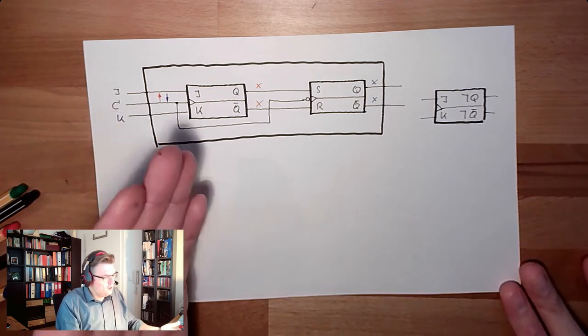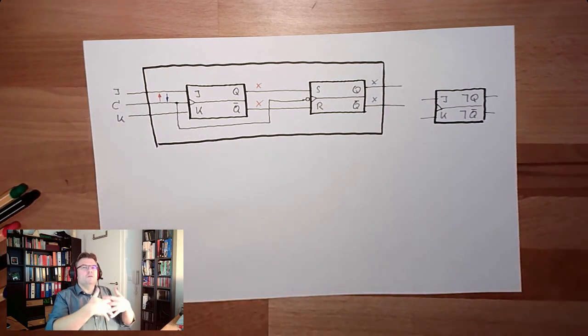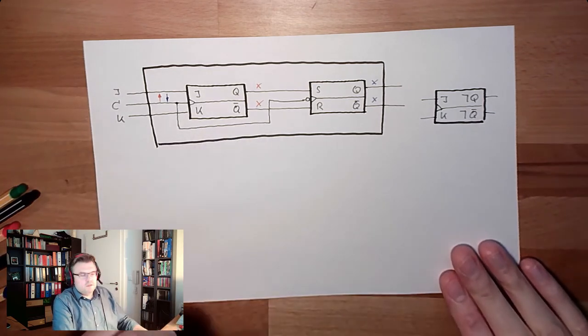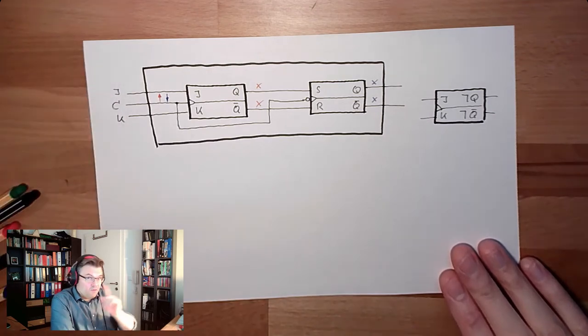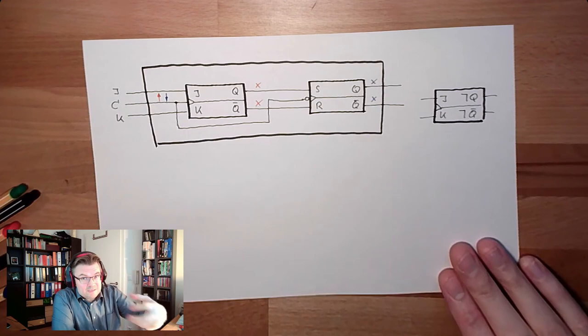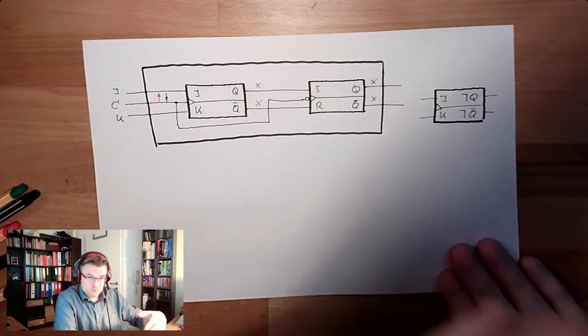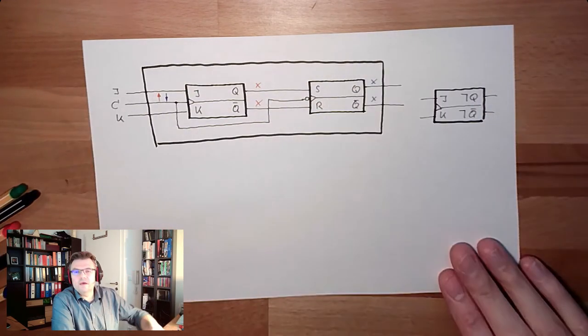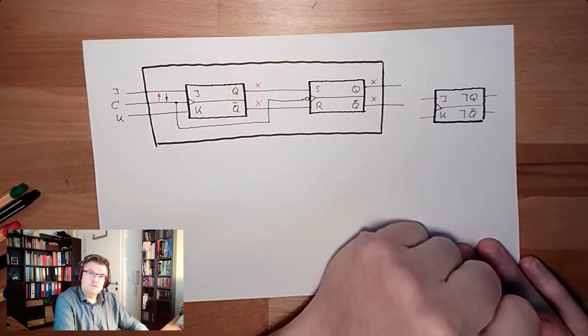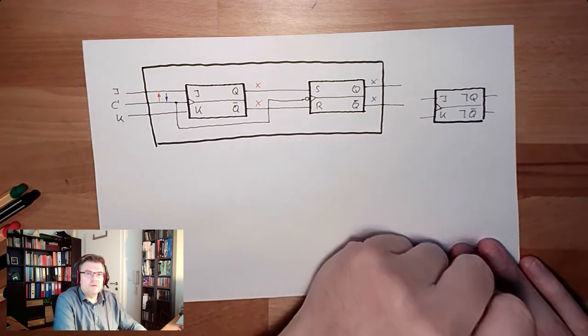So to decouple these things, you can use such type of flip-flops which will read the input on the rising edge, and on the falling edge for the next rising edge, wherever this is used, the stored thing will appear at the output. Master-slave flip-flop.